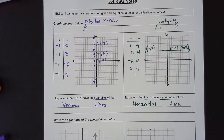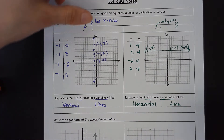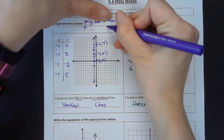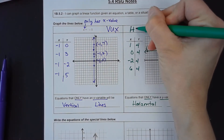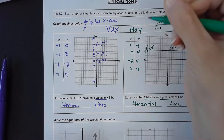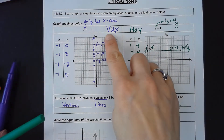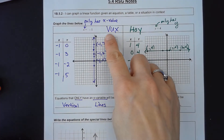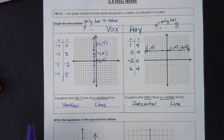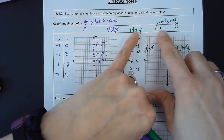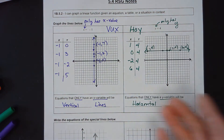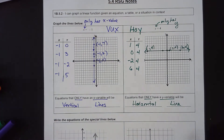Sometimes writing these little memory points helps. A lot of students have learned something called VOX HOI. The V stands for vertical and that's the x — so vertical lines are x equations. Then if you only have y, you're horizontal. You might have heard of VOX HOI in your life.